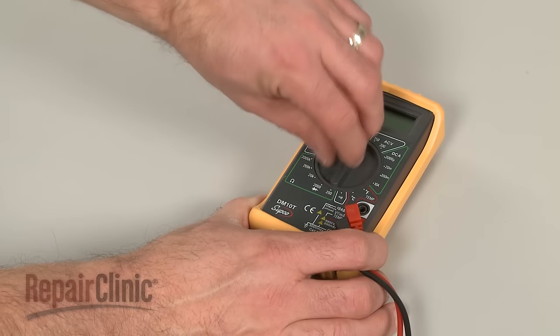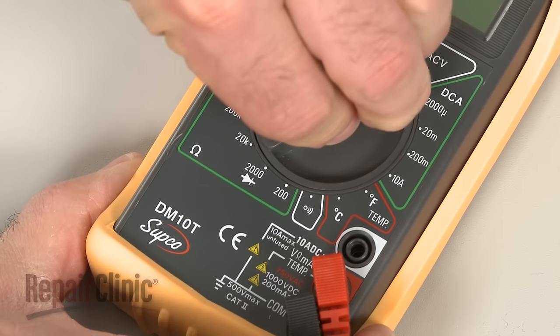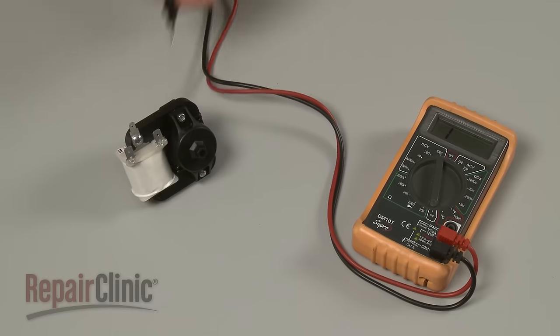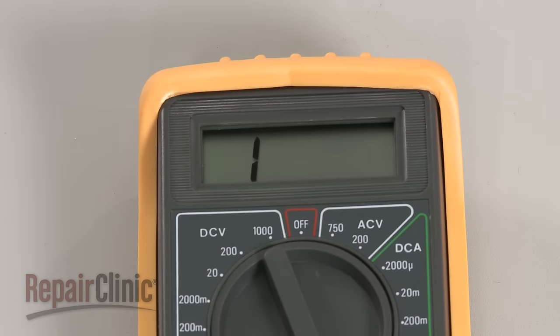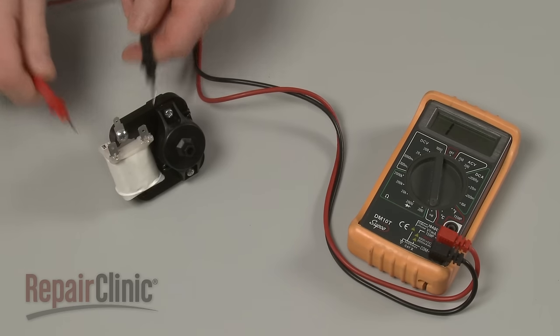You can also use a multimeter to test the motor windings for continuity, a continuous electrical path present in the motor. If the motor tests negative for continuity, then the component has failed electrically.